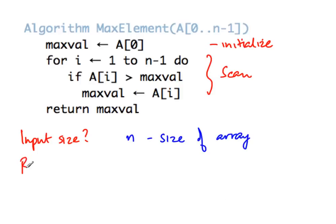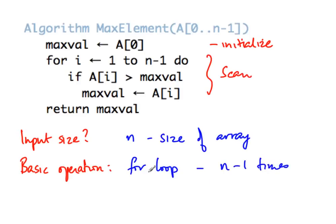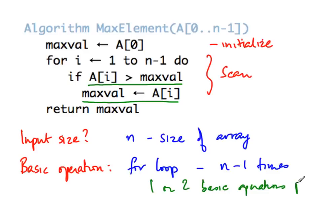Next we need to understand the basic operations and the structure of the program. There is a for loop which runs n-1 times. Inside the loop, for every i we have a condition check — A[i] greater than maxVal — and if true, an assignment of A[i] to maxVal. So we have one or two basic operations per iteration. In asymptotic analysis, we are not particularly concerned about factors of one or two, so we can take this as one basic operation per iteration.